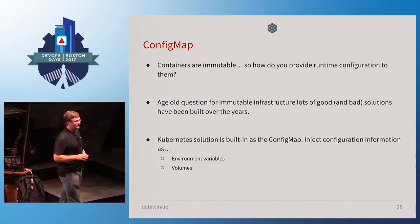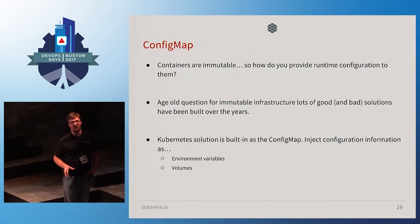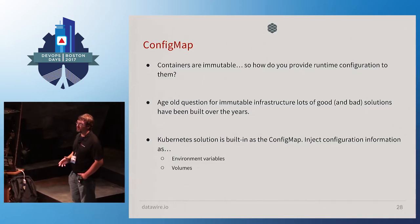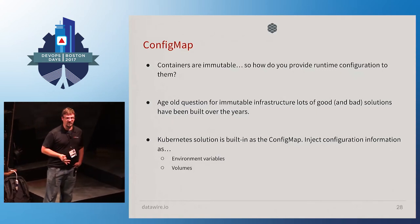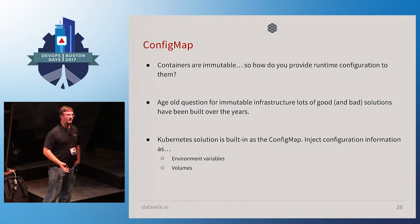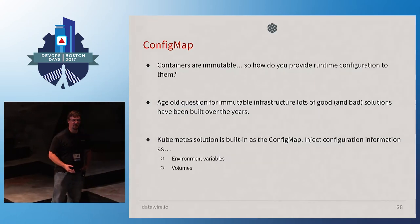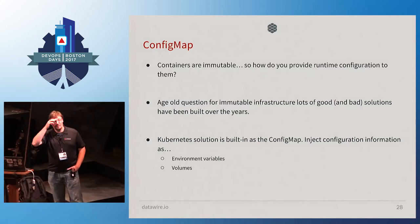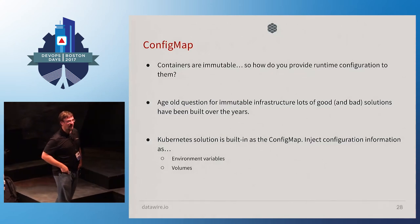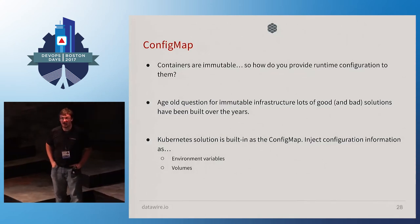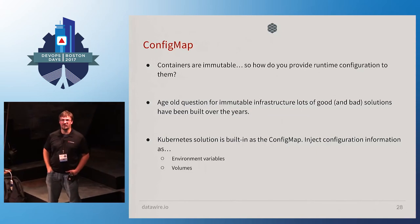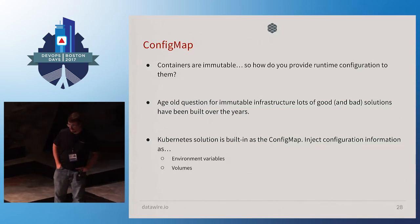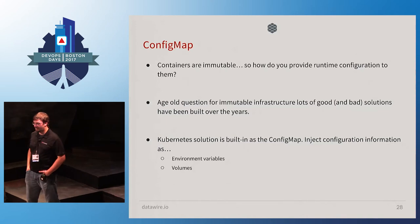Config maps: we've covered things that run code, and things that let you talk to code. Now, how do you configure code so it does what you want? There's an age-old problem with containers — or any immutable infrastructure — they're immutable, so how do you get configuration data into them? Lots of us have probably come up with horrible solutions involving S3 or Consul. Config maps are the answer.